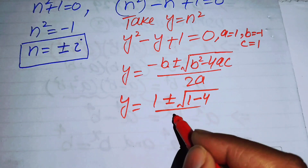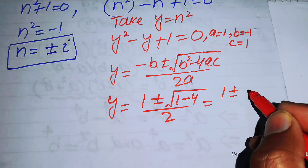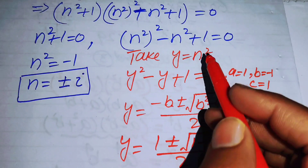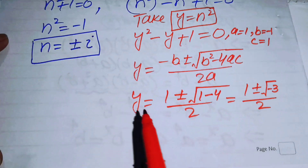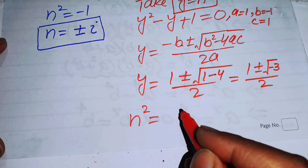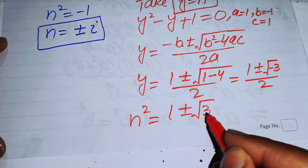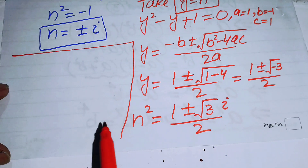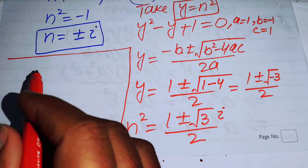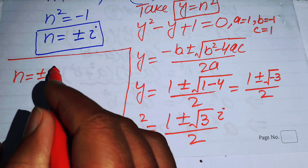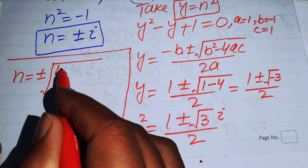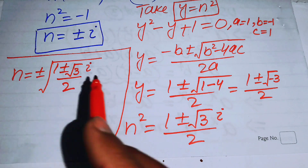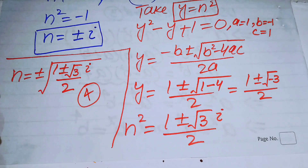Simplifying gives y = (1 ± √(-3)) / 2. Substituting back y = n^2, we have n^2 = (1 ± i√3) / 2. Taking the square root of both sides gives n = ±√((1 ± i√3) / 2), which provides four more complex roots.